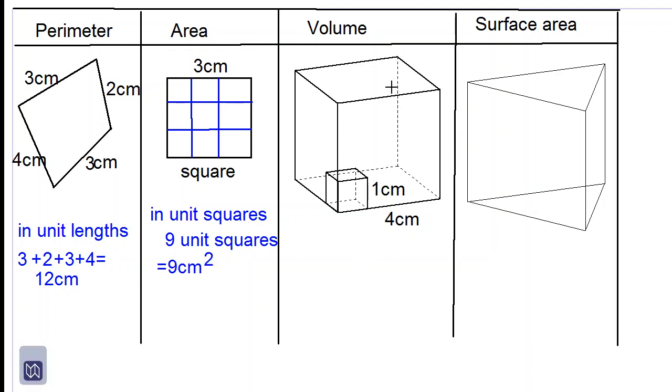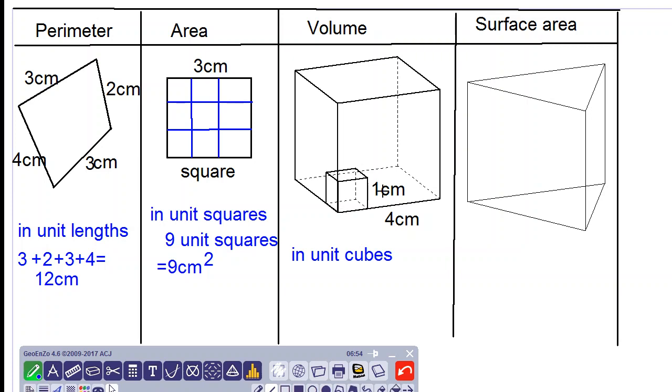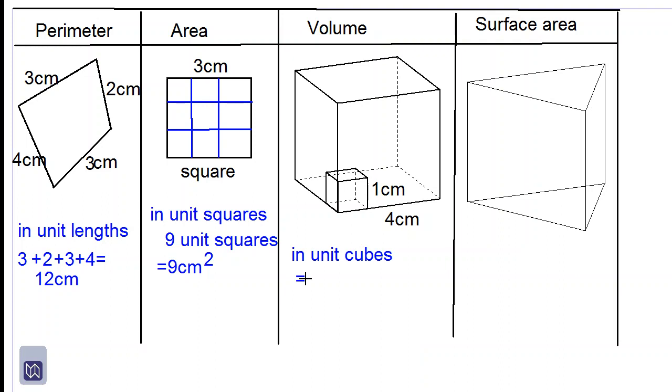Let's look at volume now. Volume is measured in unit cubes. So we have a cube of length four centimeters, and we have another little cube of length one centimeter. So we want to find out how many of these unit cubes are needed to fill the entire big cube. So we will end up getting 64 unit cubes, which is equal to 64 centimeters cubed, since the volume of one unit cube is one centimeter cubed.